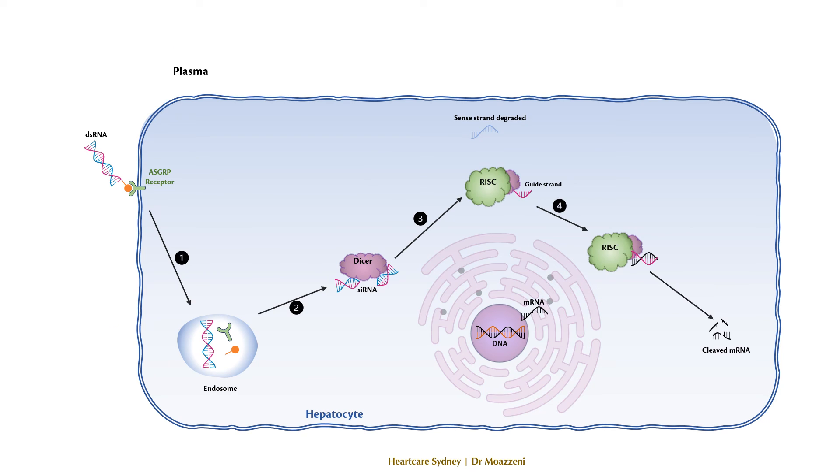To summarize, the double-strand RNA binds to the ASGRP receptor and is internalized through endocytosis. The Dicer enzyme then cleaves the double-strand RNA into small-interfering RNAs.